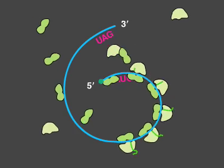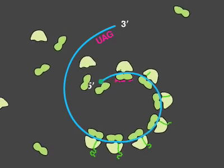New ribosomes attach to the 5' end at the same rate as the previous ones move out of the way.